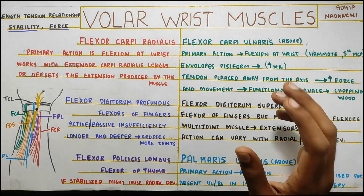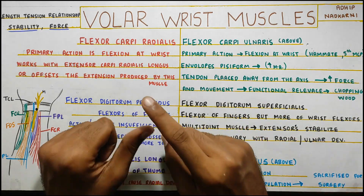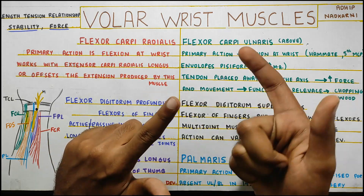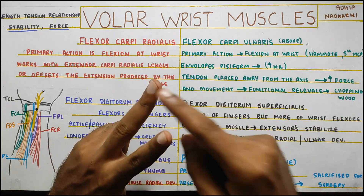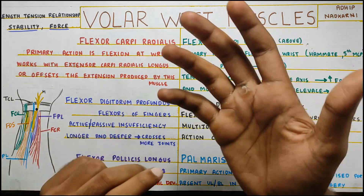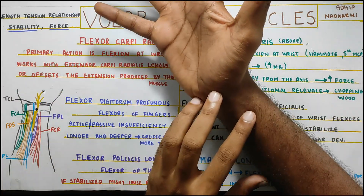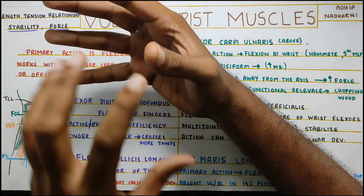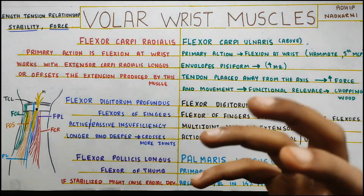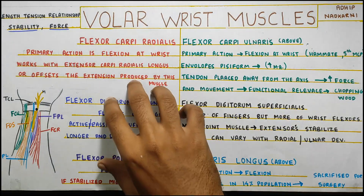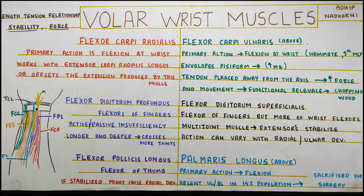First thing we need to know are the three main functions: stability, the force that is created, and what is the length-tension relationship. Stability — when you want to create movement at your fingers, your wrist has to be stabilized, and this is provided by your wrist flexors and extensors as well.